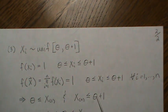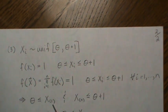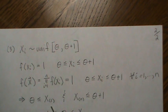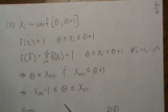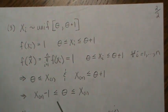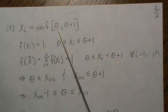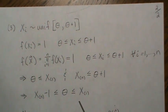Now if we subtract one over here, that means theta has to be bigger than X(n) minus one, and it has to be smaller than X(1). So this is, these are requirements based upon our problem here.